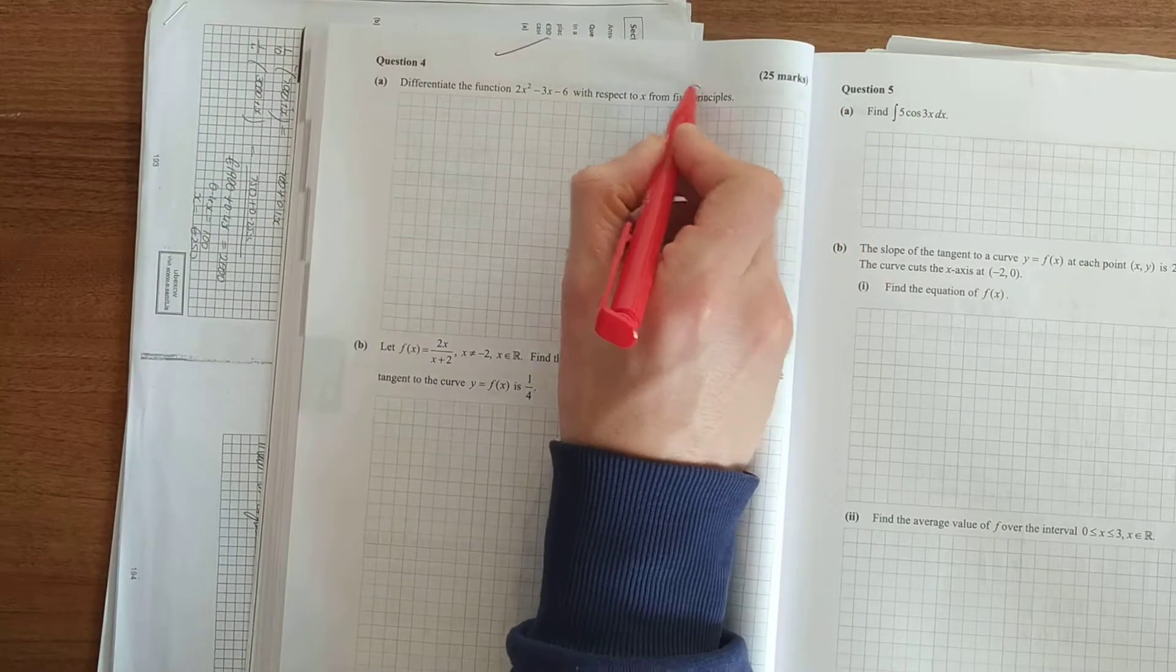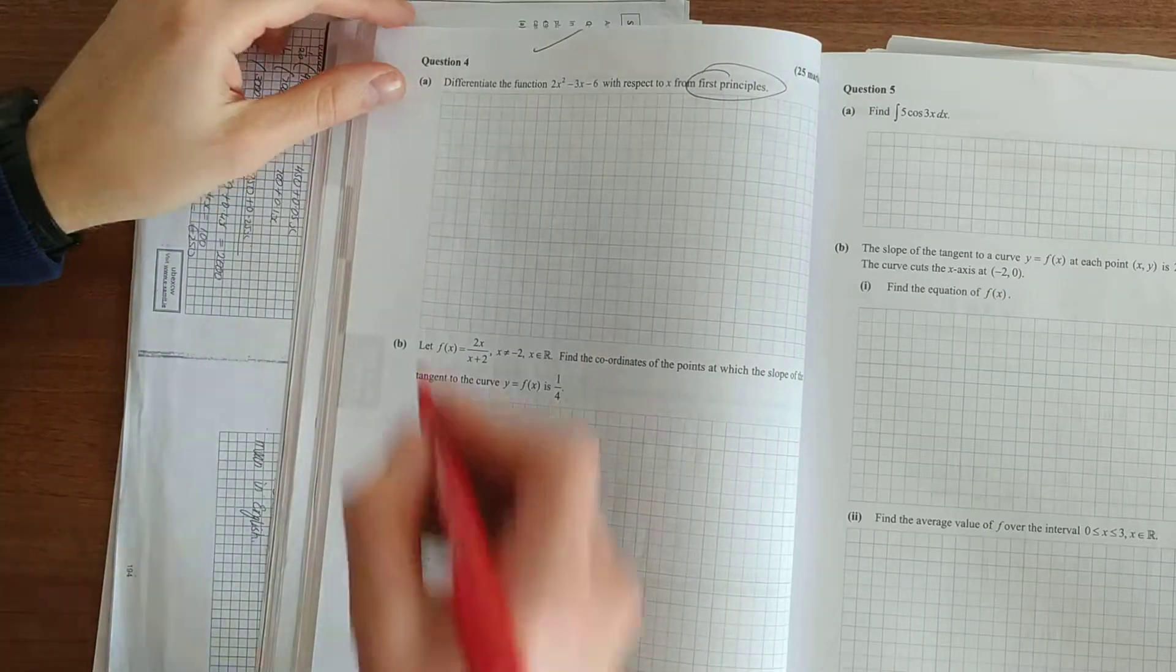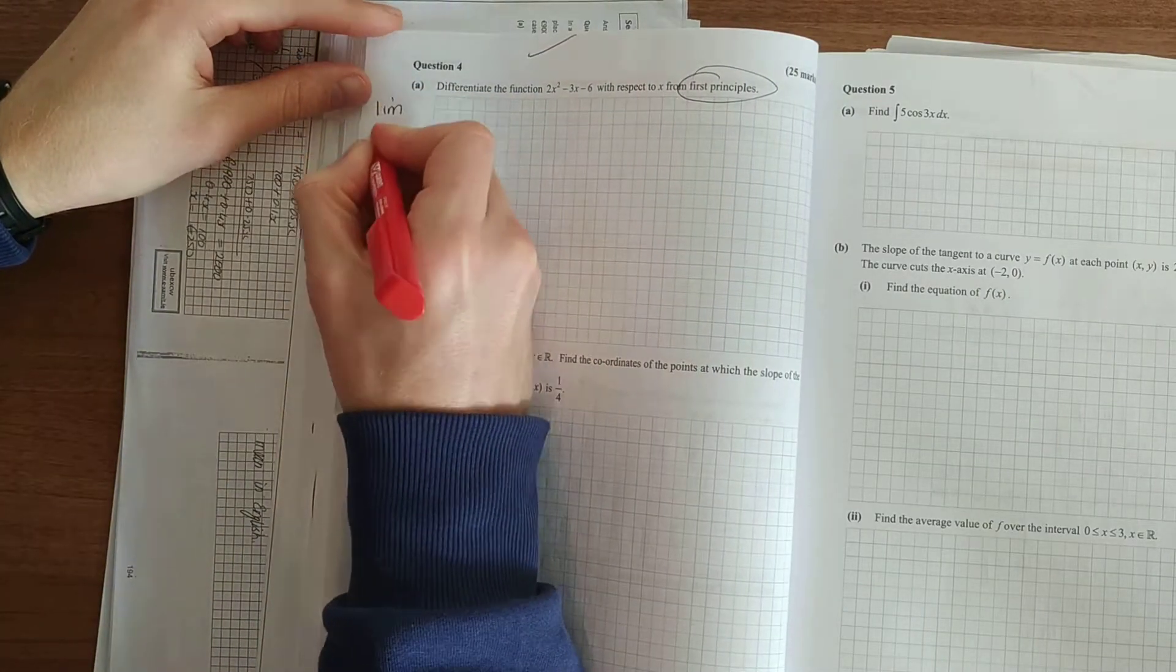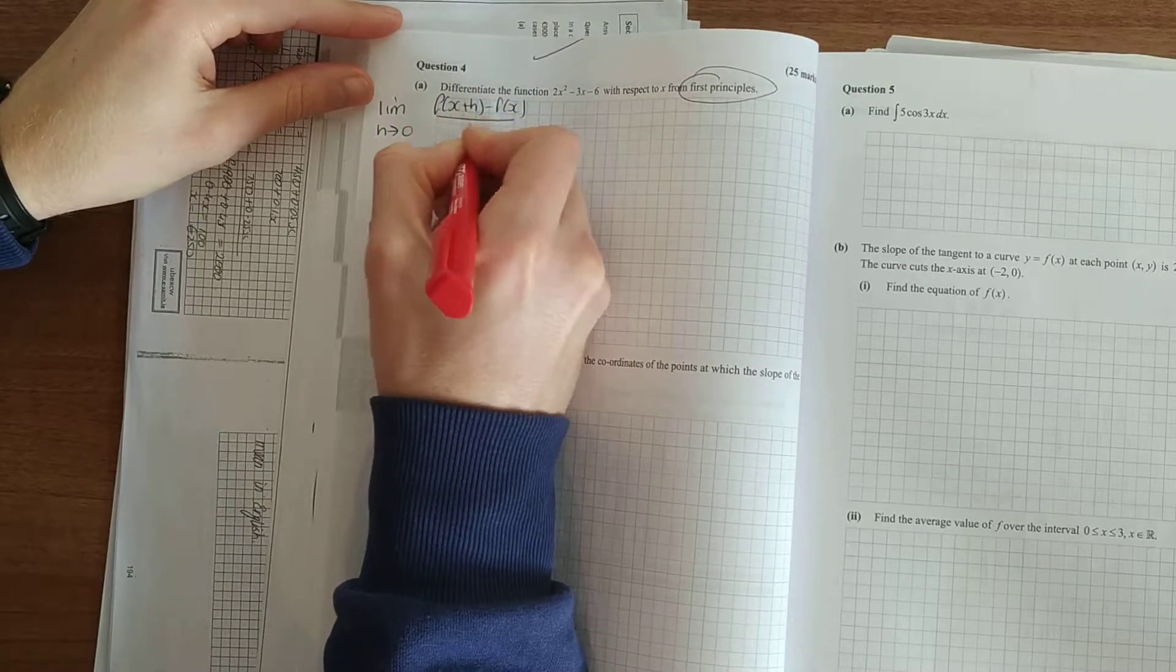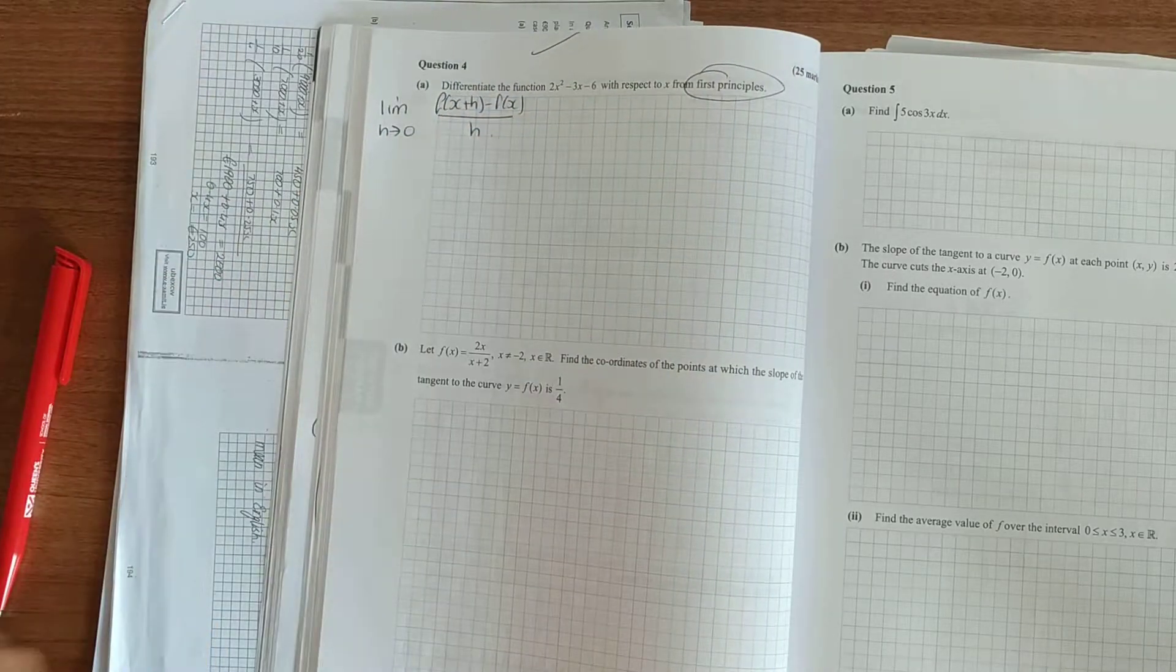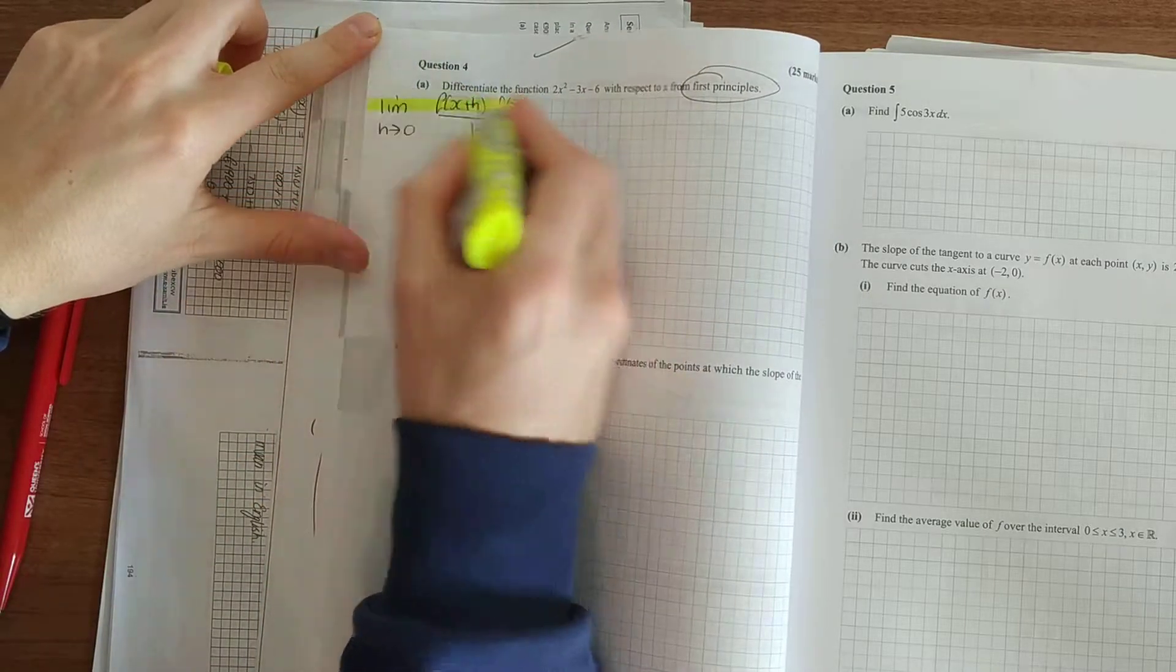So differentiate the function from first principles. Again, once you see first principles, you know, and you have to write this down straight away, you're using your rule. Limit h approaches 0, f(x+h) minus f(x) all over h.